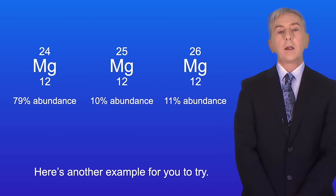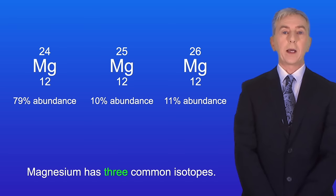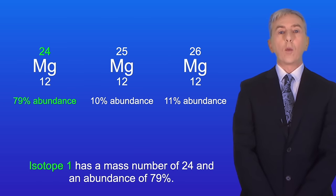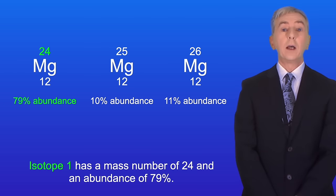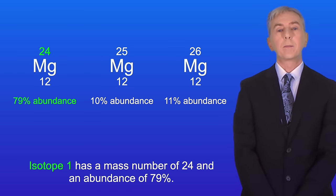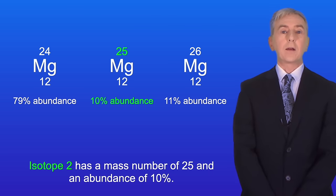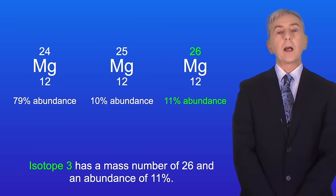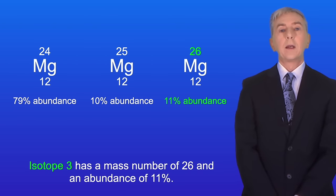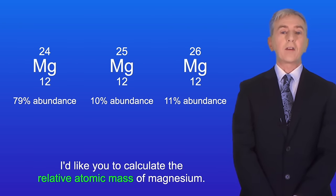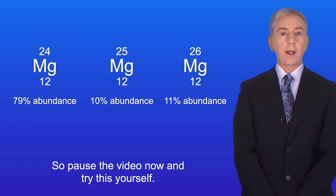Here's another example for you to try. Magnesium has three common isotopes. Isotope one has a mass number of 24 and an abundance of 79 percent. Isotope two has a mass number of 25 and an abundance of 10 percent. And isotope three has a mass number of 26 and an abundance of 11 percent. I'd like you to calculate the relative atomic mass of magnesium. So pause the video now and try this yourself.